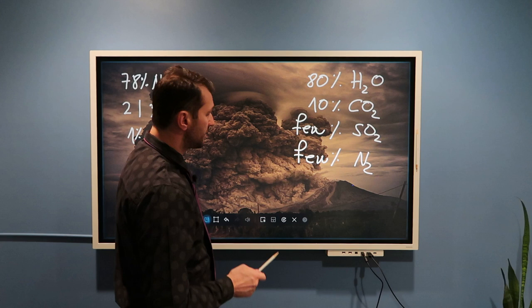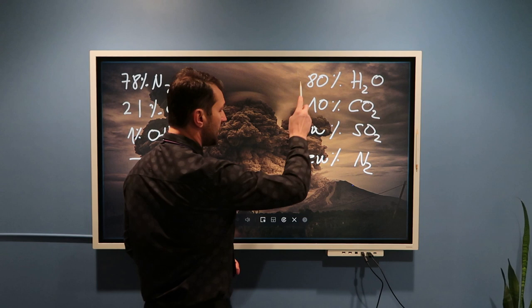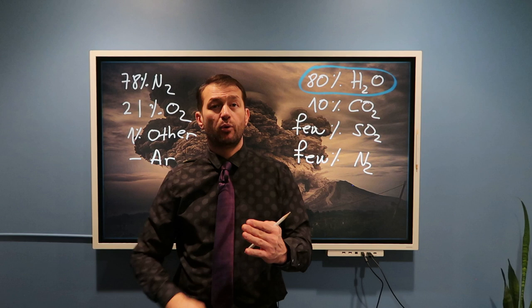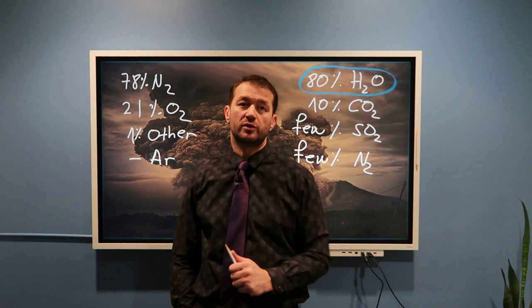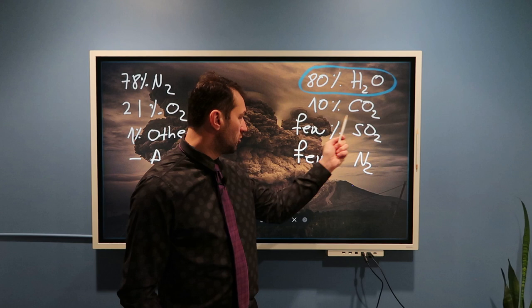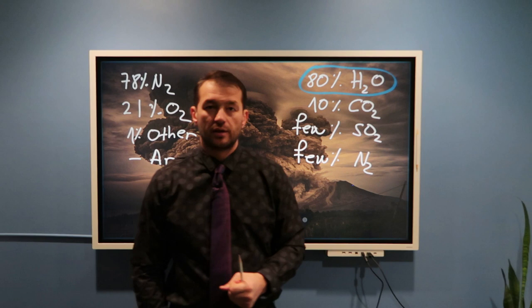As Earth was cooling down, water started condensing and we began having precipitation. For thousands and millions of years, we had precipitation falling on this planet. We started having first oceans, rivers, and lakes — and oceans dissolve CO2. So our atmosphere started losing CO2 through ocean absorption.